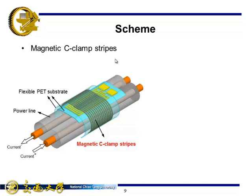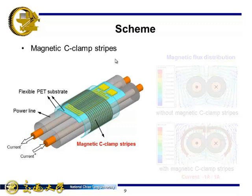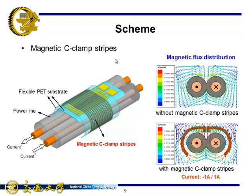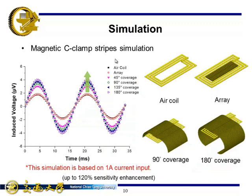Similar to the scheme, we have proposed a new sensor tag with the magnetic C-clamp stripes half enclosing the power lines. The magnetic C-clamp can concentrate and lead the surrounding magnetic flux through the center of the coil.